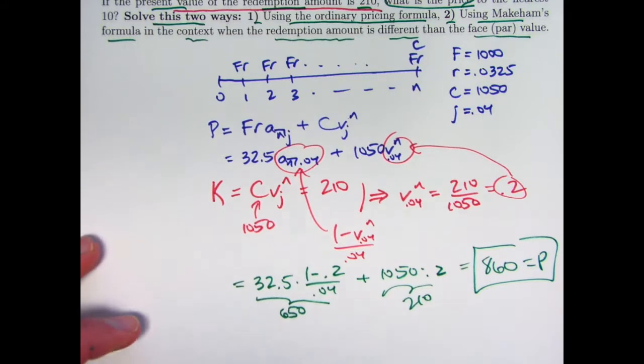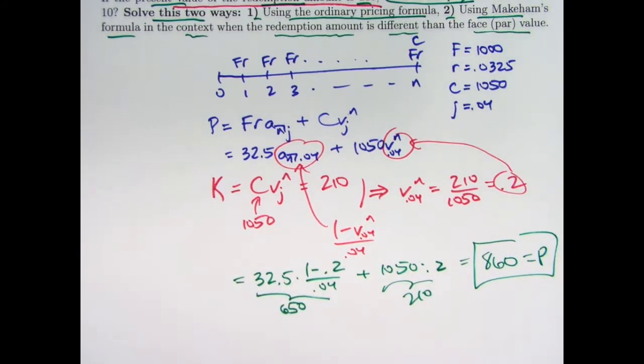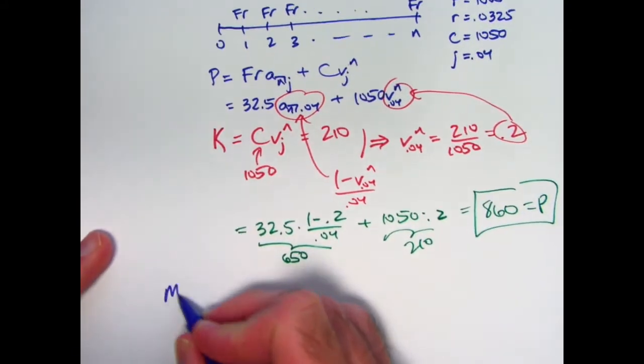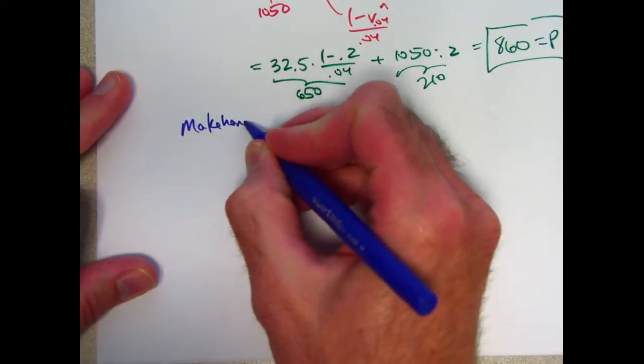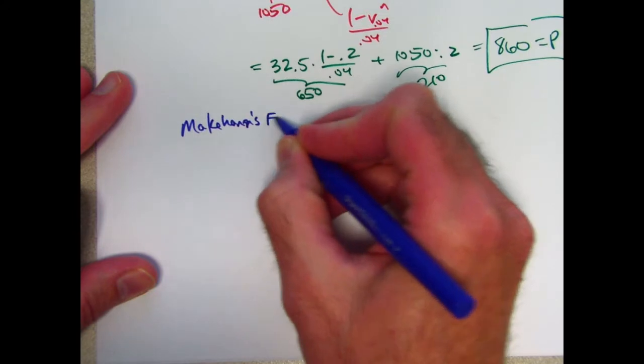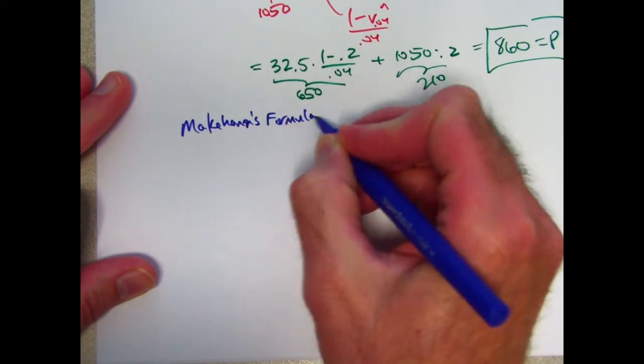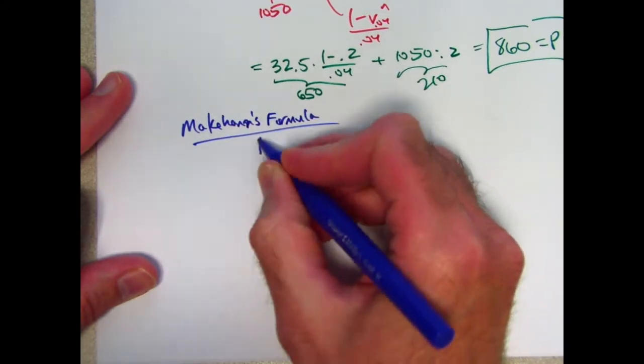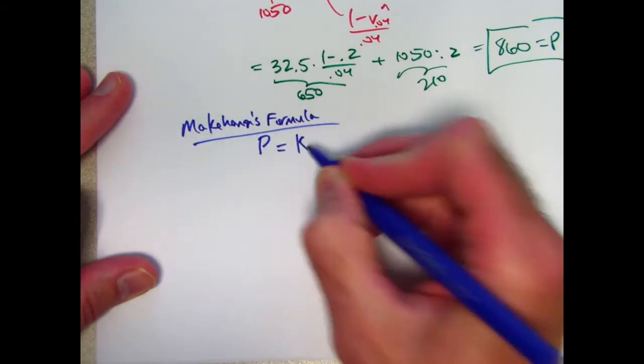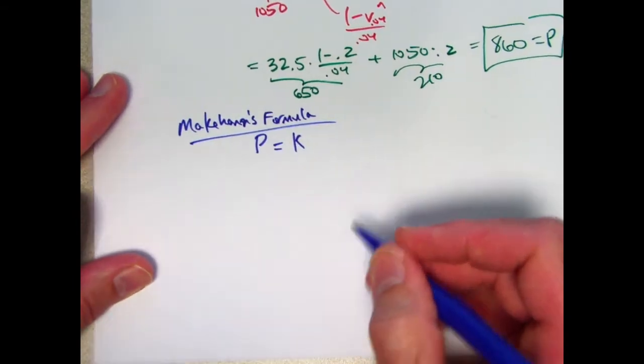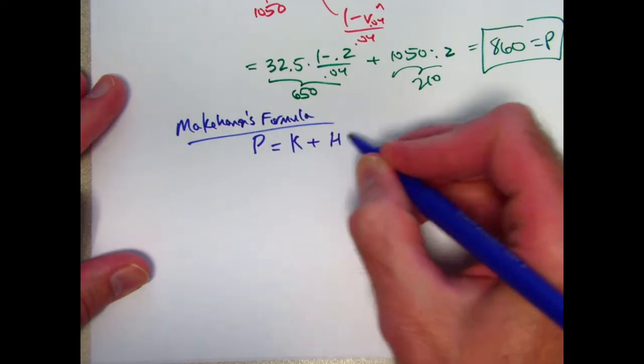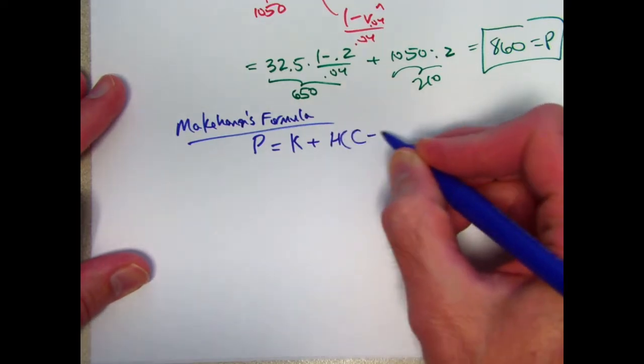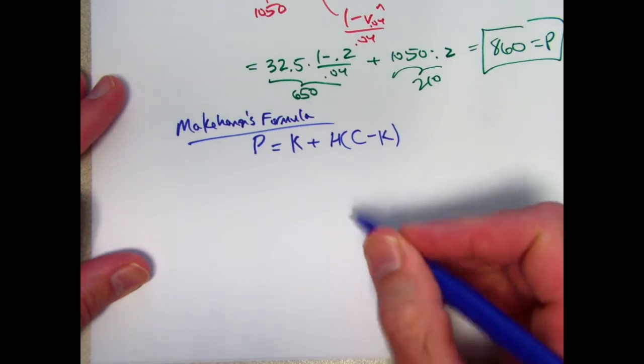Now let's solve it the second way. Let's use Makeham's formula. Makeham's formula was initially written as P equals K, the present value of the redemption amount, plus H times C minus K, where H was unspecified.